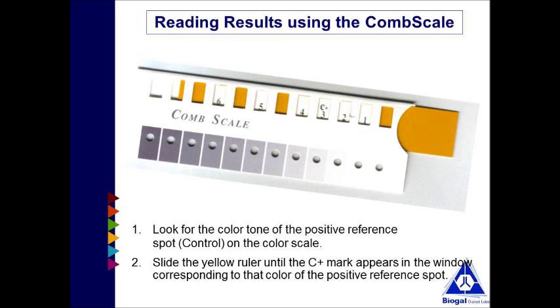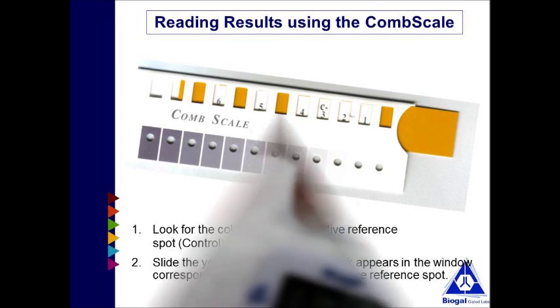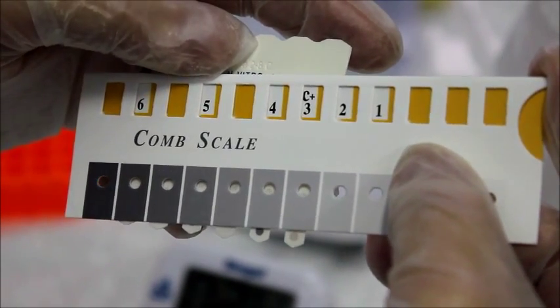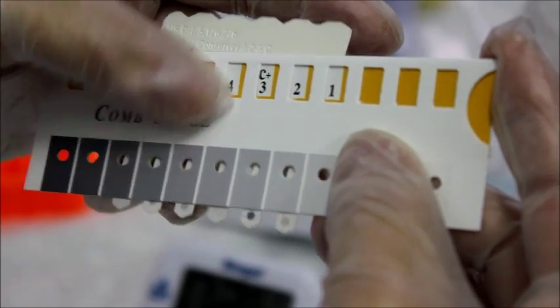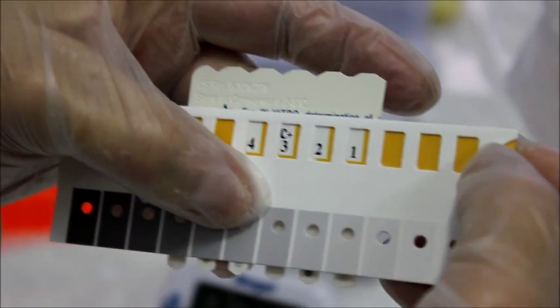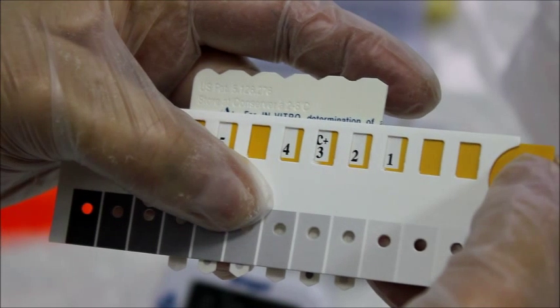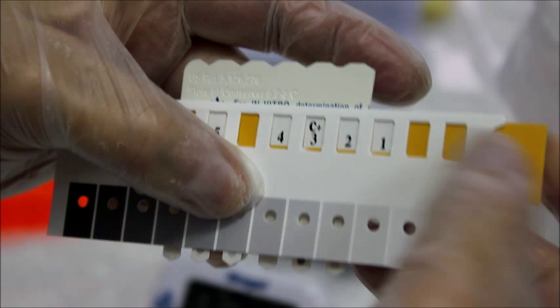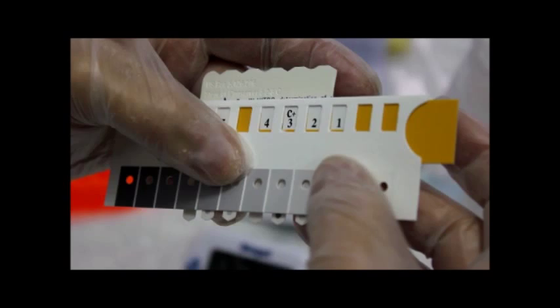When the comb is completely dry, align it with the calibrated color comb scale provided in the kit. Find the tone of purple gray on the comb scale that most closely matches the control spot on the upper spot of the comb, known as the positive reference spot. Slide the yellow ruler until a C plus mark appears in the window above the color you just found. Hold the ruler slide in this position during the entire reading and don't move it anymore.